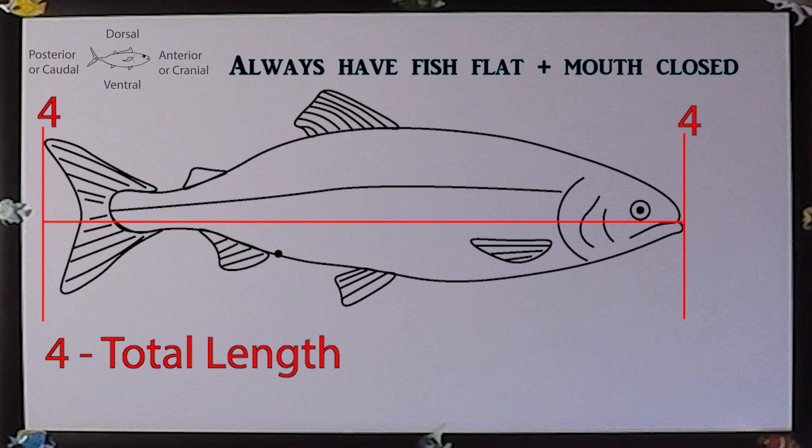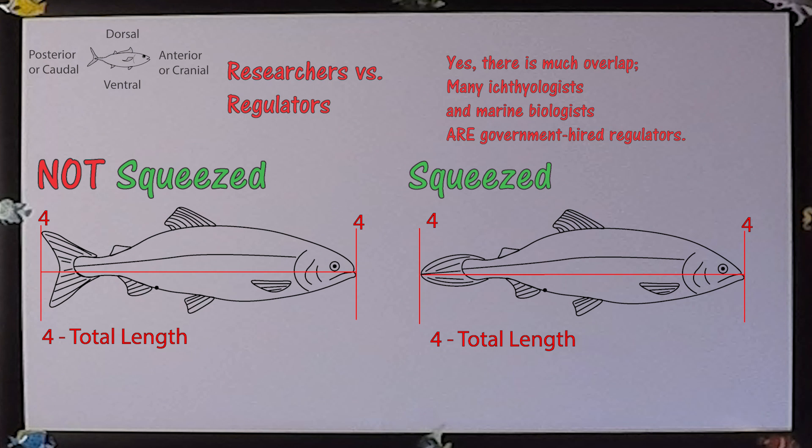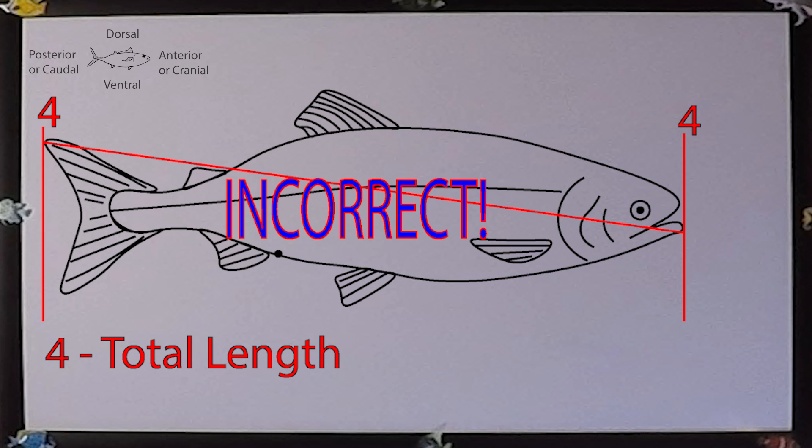Total length. Now this is what I was referring to earlier when mentioning the differences between how ichthyologists and marine biologists measure fishes in most wildlife agencies. Again, with the mouth closed, measure from the most anterior part of the fish, be it the snout or mouth, all the way to the most posterior part of the caudal fin. This is a horizontal measurement. Do not measure at an angle.